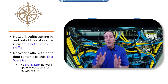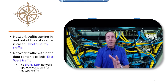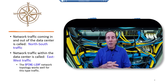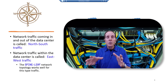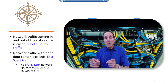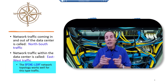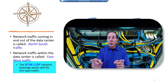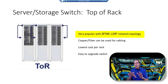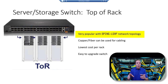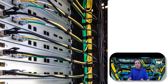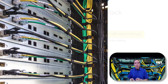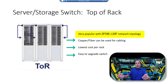Here's the key takeaway: if the most critical aspect of your data center is north-south traffic, you'll design it very differently. If the most critical aspect is east-west traffic, you'll typically use an architecture called spine-leaf topology. It's in spine-leaf topology that the TOR switch shines. When a data center is designed with spine-leaf architecture, copper twisted pair can be used because of short distances, giving the lowest cost per rack and easy switch upgrades.